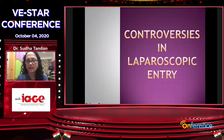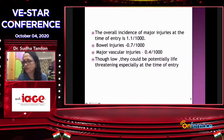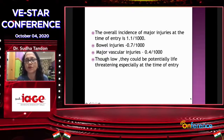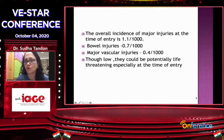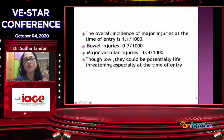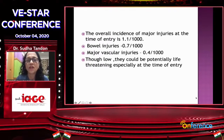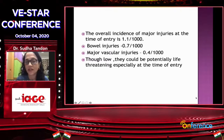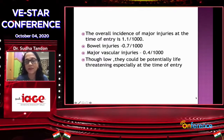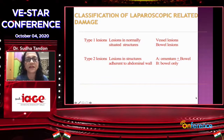In this topic of laparoscopic entries, I'll try to cover all the entries that are available. One must remember that we have to be familiar with at least three or four techniques, because sometimes we land up into a problem and one may fail and we have to go to the other one. The major injuries happening at the time of entry were reported as 1.1 per thousand, bowel injuries 0.7 per thousand, and vascular injuries 0.4 per thousand. Though they are low, they can be really life-threatening. One particular endoscopic surgeon may not have experienced any complication, but that doesn't allow him not to know about these problems — that's why we should know all the techniques.